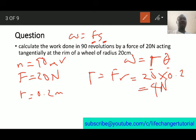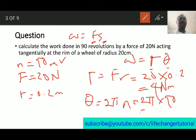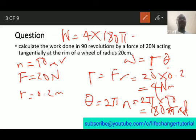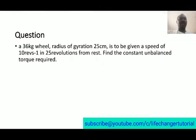The angular distance is 2π times the number of revolutions, so that is 2π times 90, which equals 180π radians. Finally, work equals torque times angular distance: the torque is 4 and the angular distance is 180π, so the work done is 720π joules. That is the answer to question two.